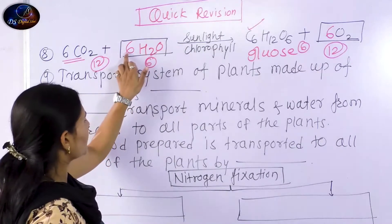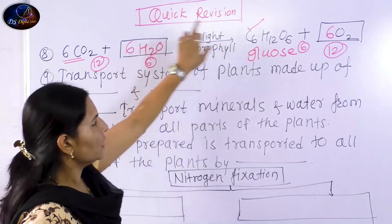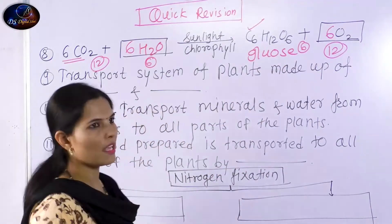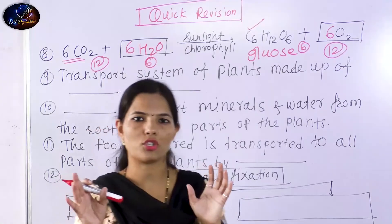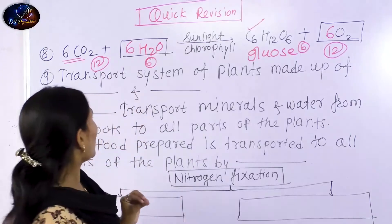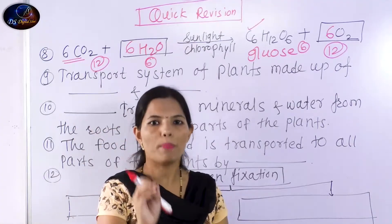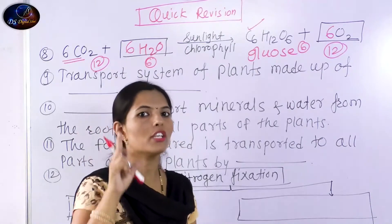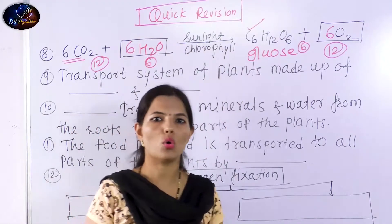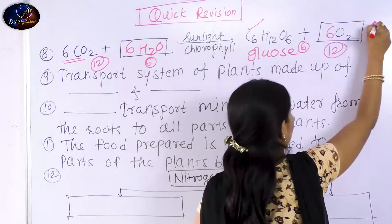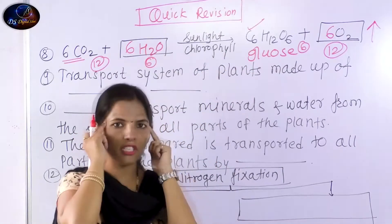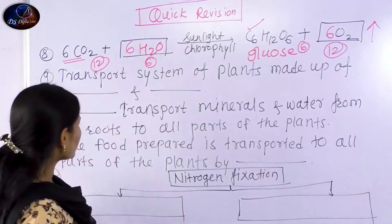Hydrogen: 6 times 2 gives 12 hydrogen atoms, so that balances. So the final balanced chemical equation is: 6CO2 plus 6H2O, with sunlight and chlorophyll, gives C6H12O6 plus 6O2 oxygen gas. This is the photosynthesis chemical reaction.